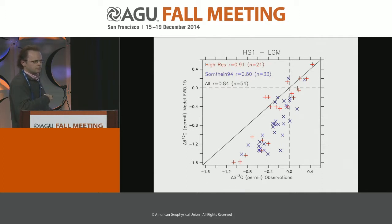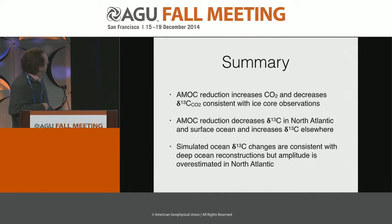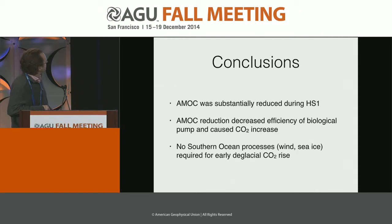I think this is convincing evidence from distributed deep ocean data that indeed there was a large reduction in the AMOC during Heinrich Stadial 1. To summarize: the AMOC reduction in the model increases CO2 in the atmosphere and decreases atmospheric δ13C, and those changes — both amplitude and rate — are consistent with ice core observations. The AMOC reduction decreases δ13C in the North Atlantic and surface ocean and increases δ13C elsewhere in the ocean, also consistent with deep ocean reconstructions. However, the amplitude in the model is overestimated in the North Atlantic.